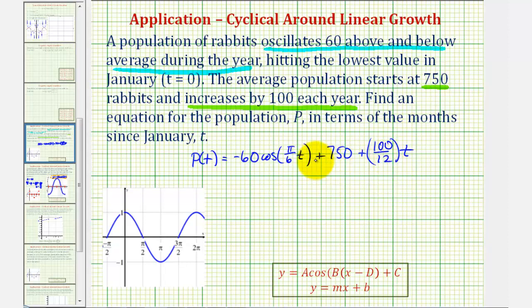So the last step here would be to simplify one hundred twelfths. These two share a common factor of four. This simplifies to 25 thirds. So the population equation is p of t equals negative 60 times cosine of pi divided by six times t plus 750 plus 25 thirds t.